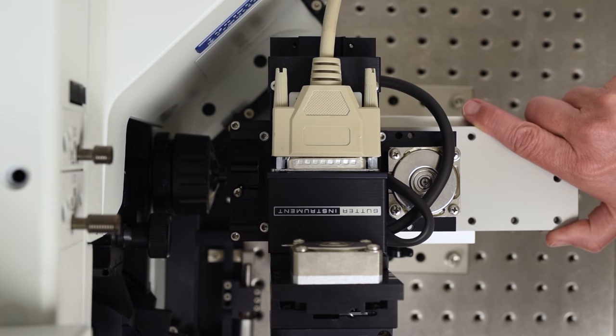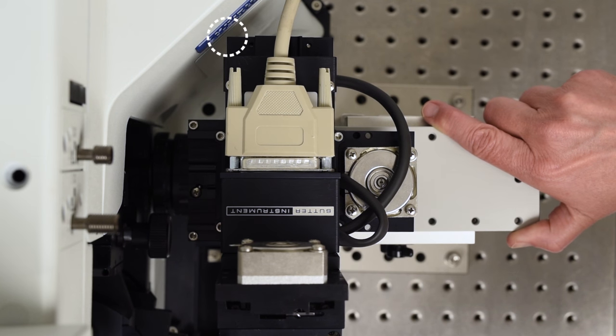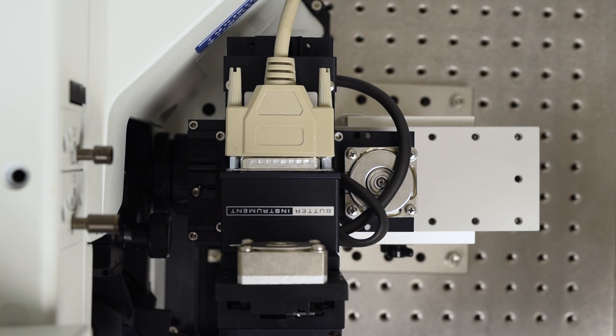In our example, you can see that when moving the manipulator in the X axis, its path is obstructed by the wings of the microscope. In this case, the solution to this issue is to use our right angle adapter.